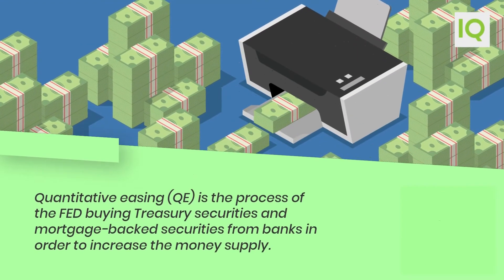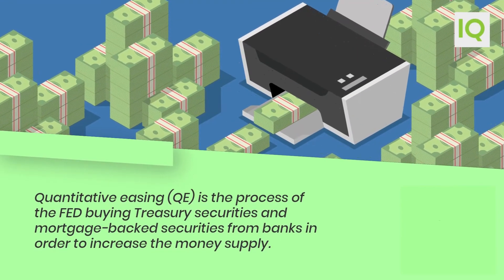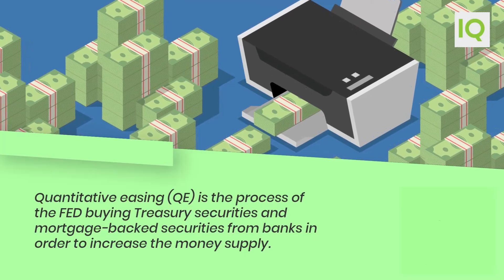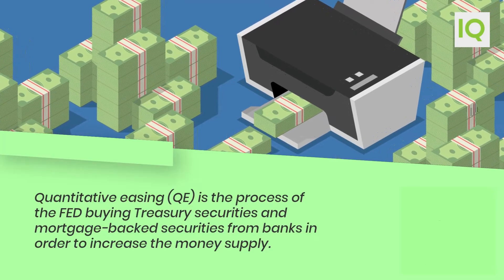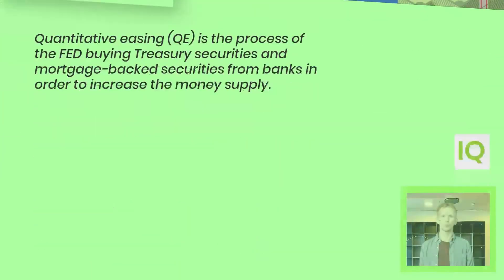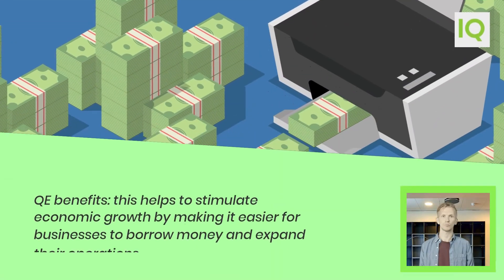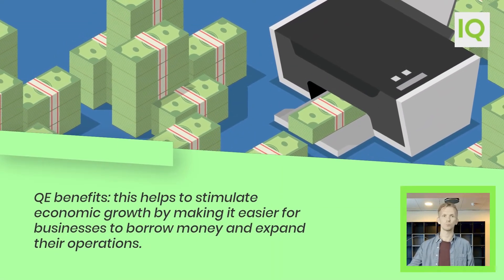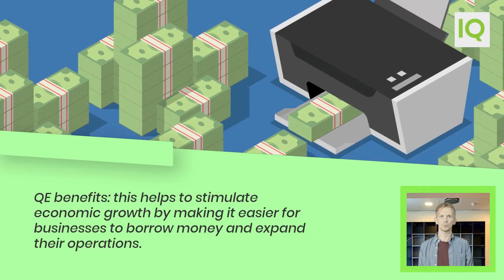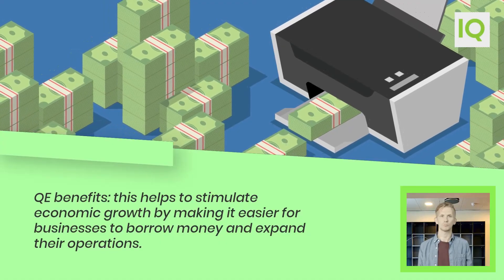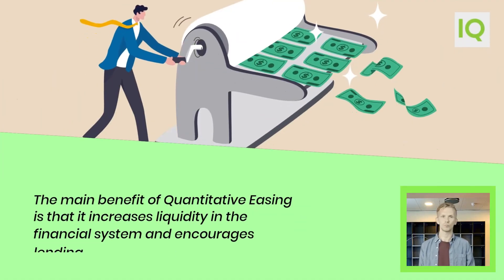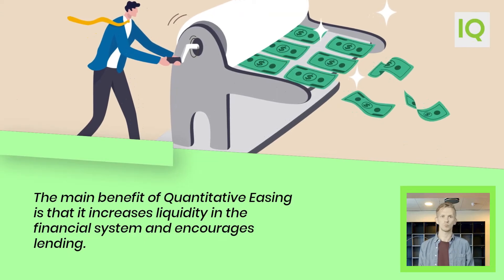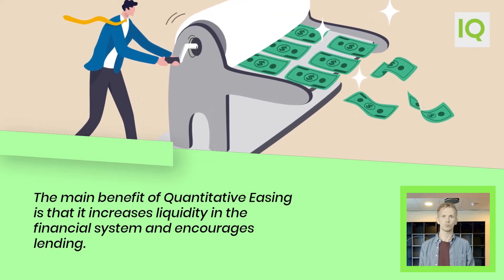Quantitative easing, QE, is the process of the Fed buying treasury securities and mortgage-backed securities from banks in order to increase the money supply. This helps to stimulate economic growth by making it easier for businesses to borrow money and expand their operations. The main benefit of quantitative easing is that it increases liquidity in the financial system and encourages lending.